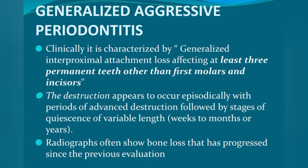The destruction in GAP appears to occur episodically, with periods of advanced destruction followed by stages of quiescence of variable length. The disease may get arrested for a few weeks, months, or even one to two years, during which clinical inflammation, bone loss, and rapid pocket progression are halted. However, after a period of arrest, advanced destruction may recur. Radiographs often show bone loss that has progressed since the previous evaluation, even though clinical inflammation may appear less at the time.